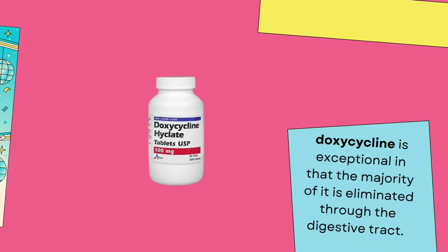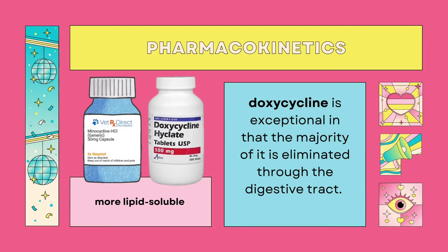Now, let's discuss the differences between tetracyclines. All tetracyclines work in the same way, but there are still differences between them. Both doxycycline and minocycline are more lipid-soluble than tetracycline, chlorotetracycline, or oxytetracycline, which allows them to permeate the central nervous system, the eye, and the prostate at therapeutic doses. Moreover, doxycycline is exceptional in that the majority of it is eliminated through the digestive tract.